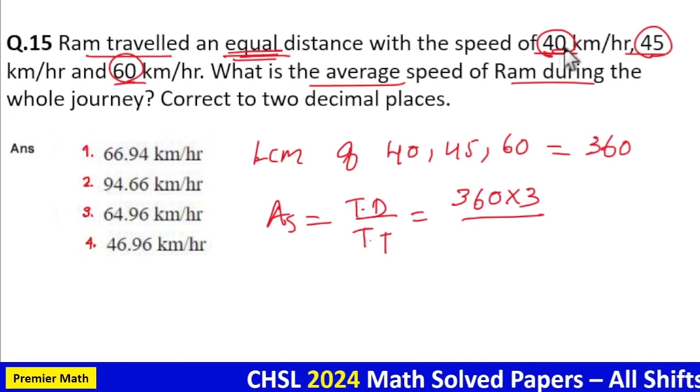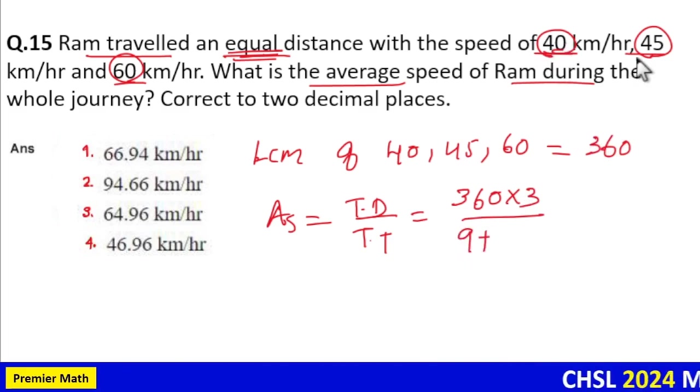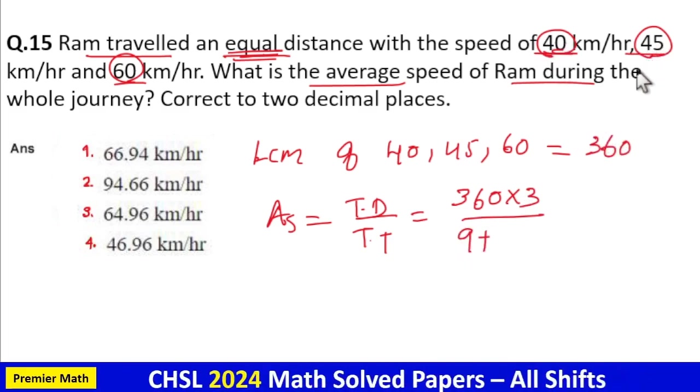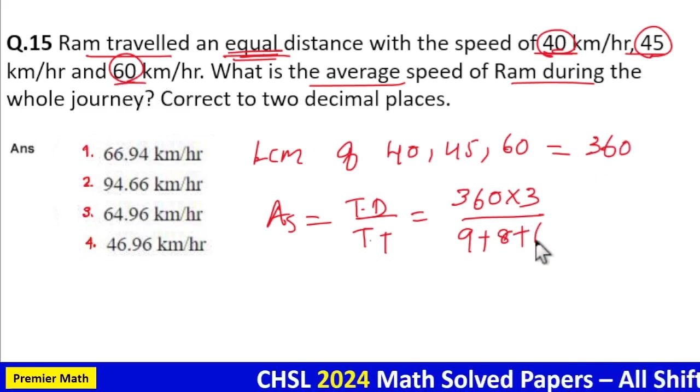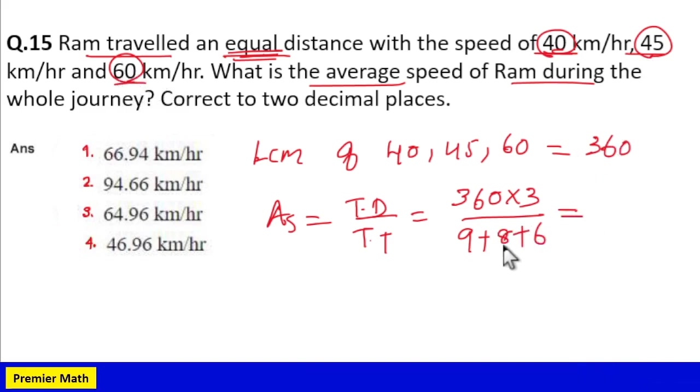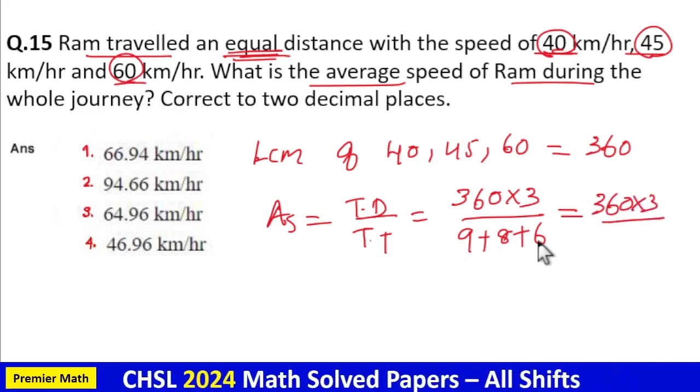Time taken is equal to 360 by 40 is 9 hours, and 360 by 45 is equal to 8 hours, 360 by 60 is equal to 6 hours. Which means this is equal to 360 into 3 divided by 8 plus 6, 14, 14 plus 9, 23.